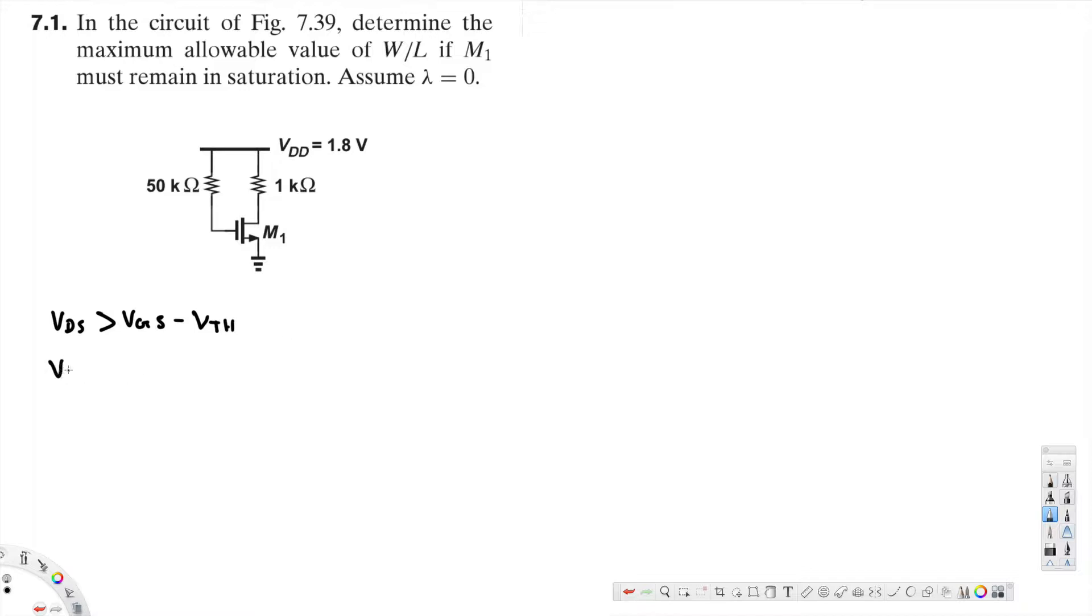VDS can be written as VDS is equivalent to VDD minus ID times RD, that is 1 kilo ohm in our case. Now instead of this VDS, we are going to replace this VDD minus ID times RD, so this will become VDD minus ID times 1 kilo ohm.